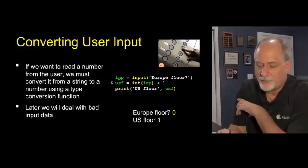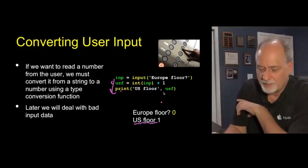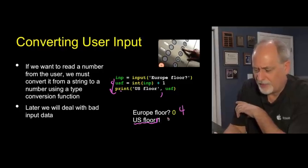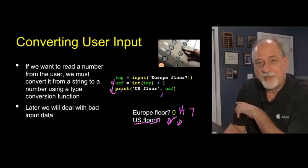It gets stored in the inp variable. Then we move to the next statement. On this right-hand side, we convert that string variable to an integer. So that becomes the integer zero. We add one to it, and then that becomes one. And then we assign that into USF. I've named this variable United States floor.